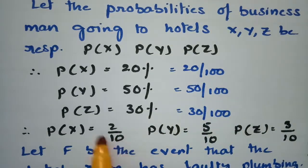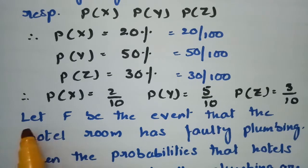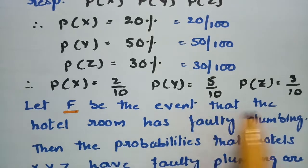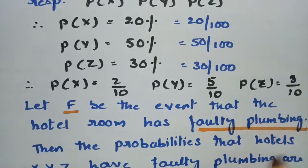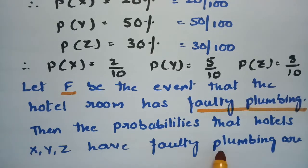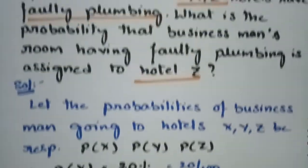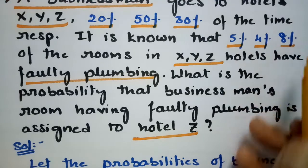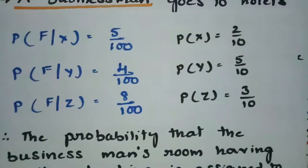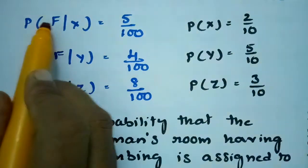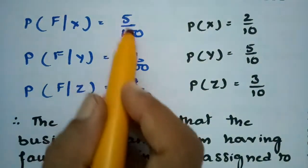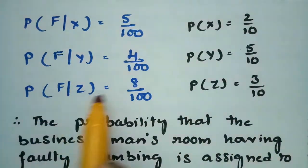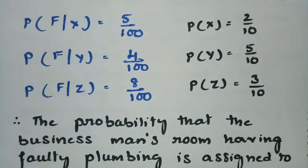Simplifying, these become 2 by 10, 5 by 10, and 3 by 10. Let F be the event that the hotel room has faulty plumbing. Then the probabilities that hotels X, Y, Z have faulty plumbing are: hotel X is 5 percent, that is 5 by 100; hotel Y is 4 by 100; and hotel Z is 8 percent, that is 8 by 100.